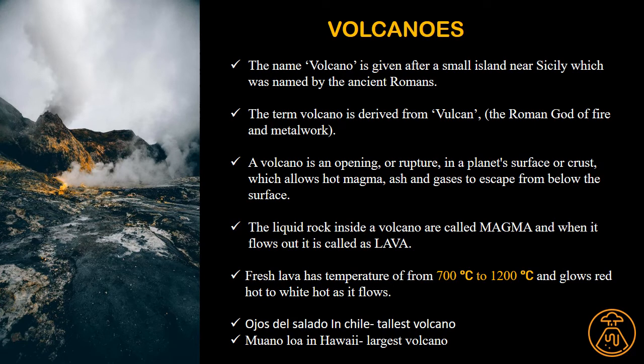The name 'volcano' is given after a small island near Sicily, named by the ancient Romans. The word 'volcano' is derived from 'Vulcan', which means the Roman god of fire. A volcano is a vent or an opening through which molten magma or lava comes out, containing hot gases, superheated steam, and pyroclastic material thrown up during volcanic eruption.